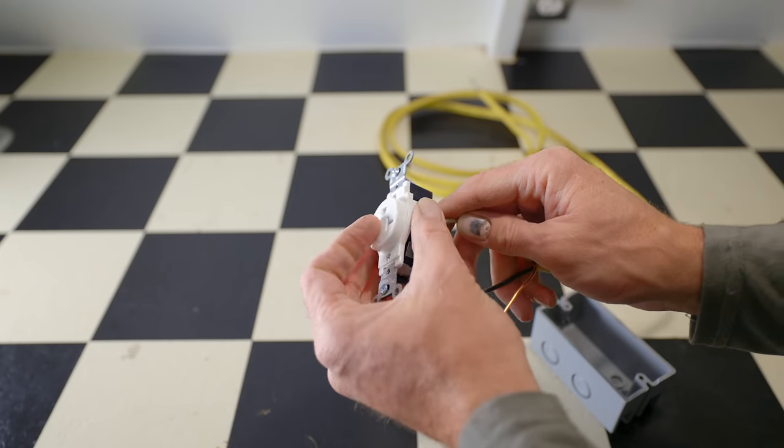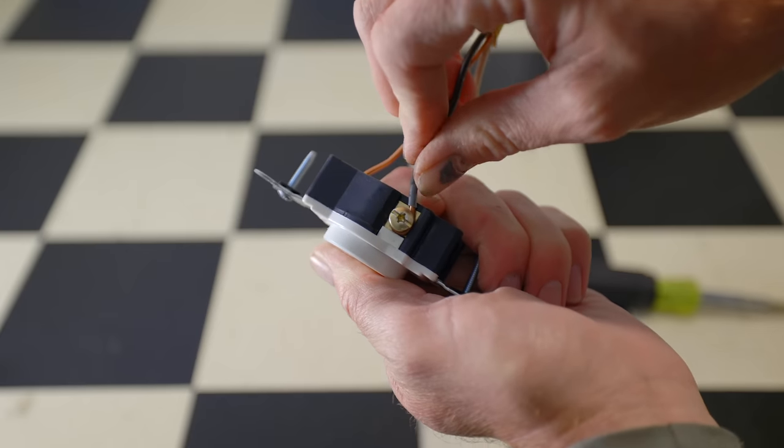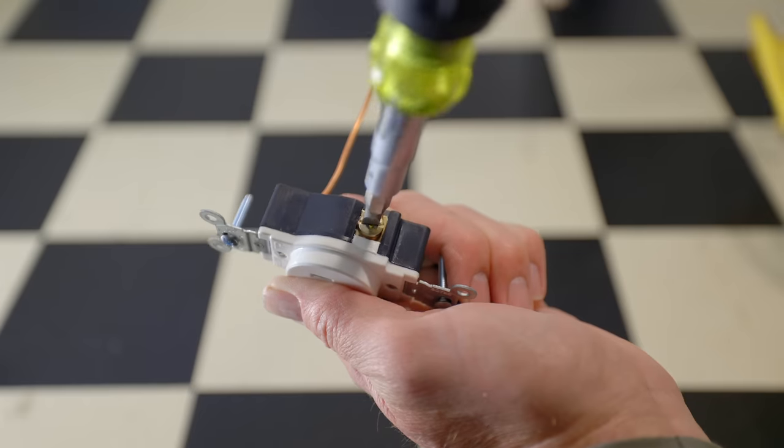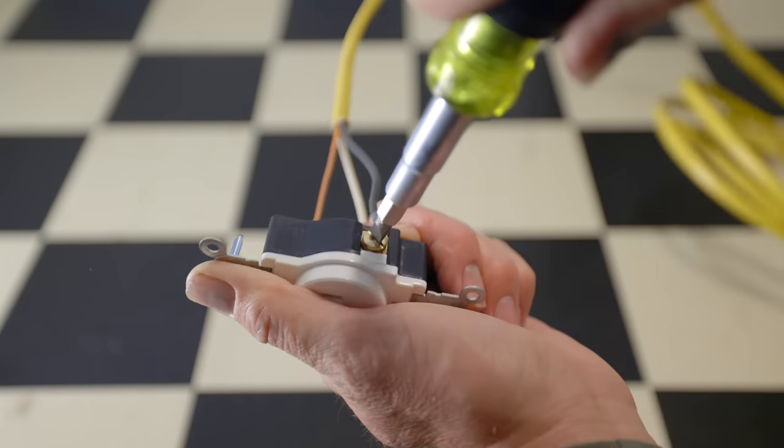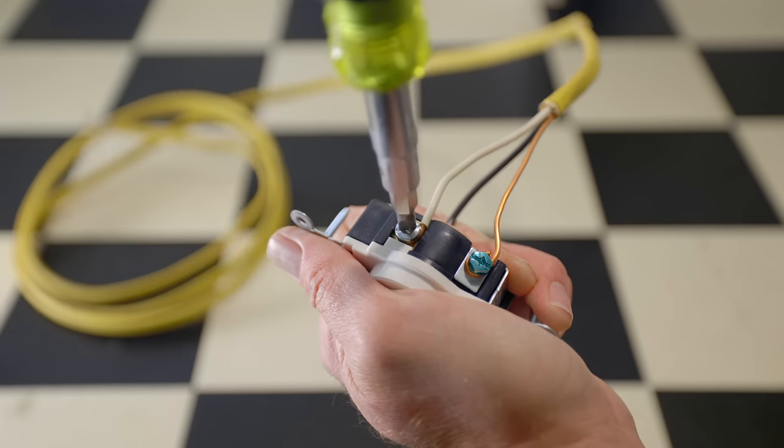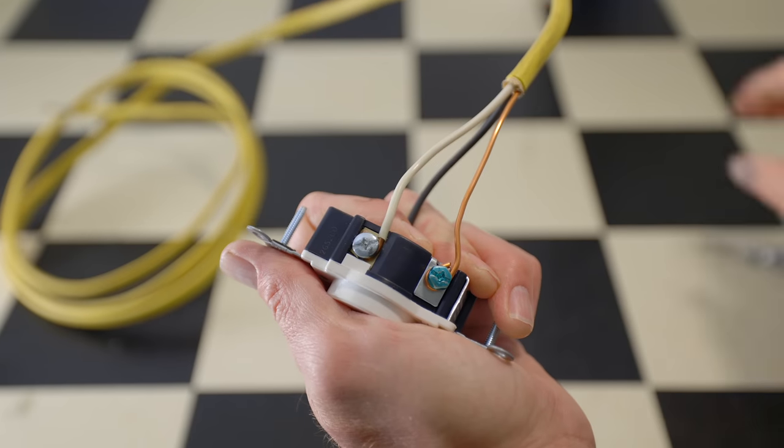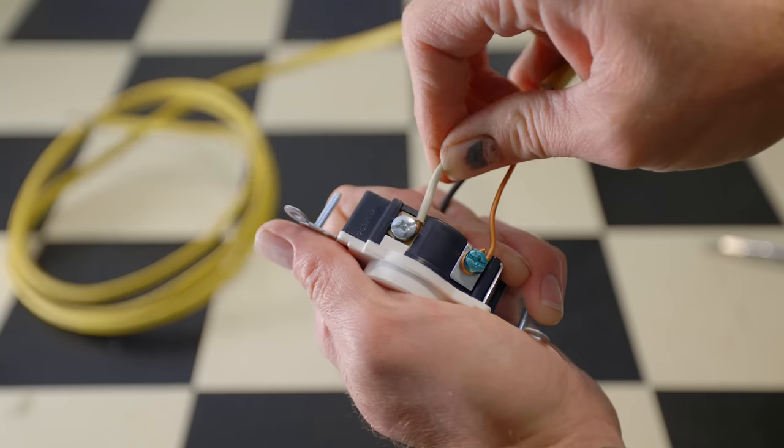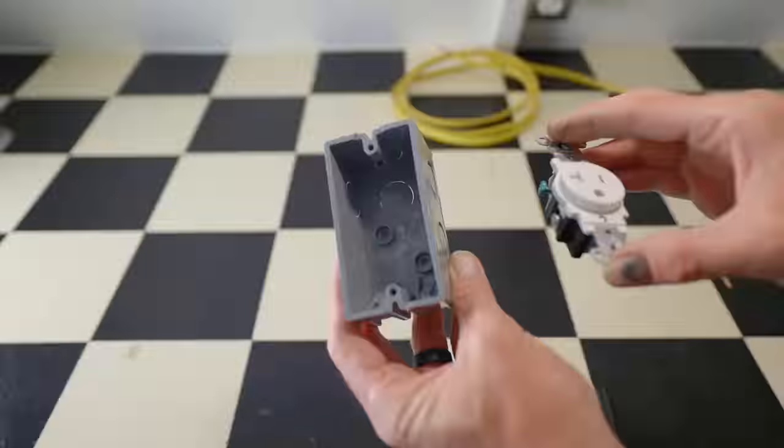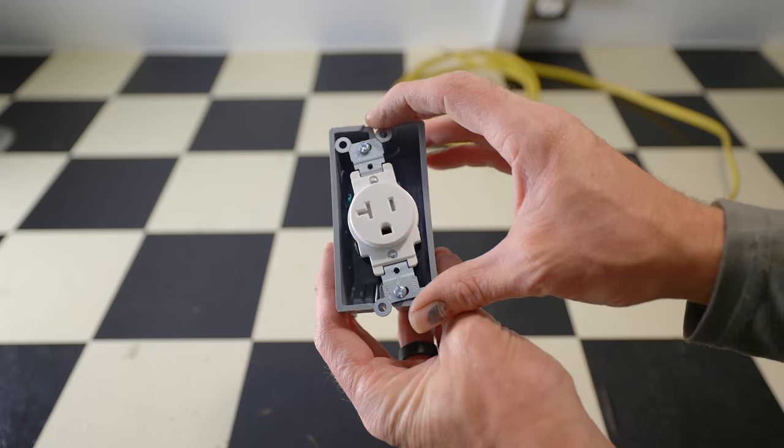If you look at the outlet that we replaced it with, and you look at the back connections, rather than it being a punch down, you can see that we can have a solid connection on there. We can torque down these screws, have a much broader connection than just that punch down. So it's a much better system.